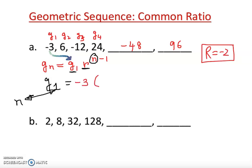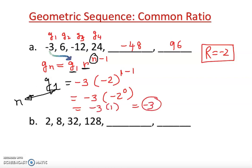The common ratio is -2. So: -3 times (-2)^(1−1) = -3 times (-2)^0 = -3 times 1 = -3. Look, that is exactly the same as z1. So we can clearly tell that z1 is equal to -3, and that is true. This is how we work with the general term.